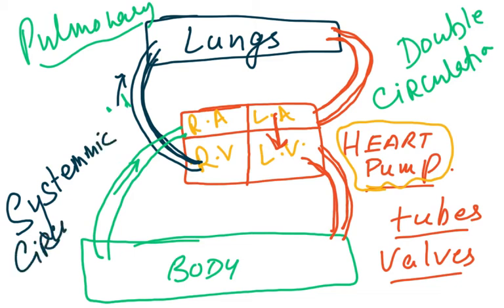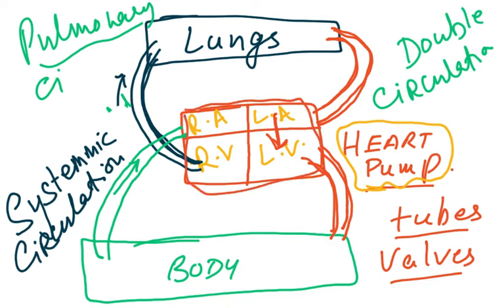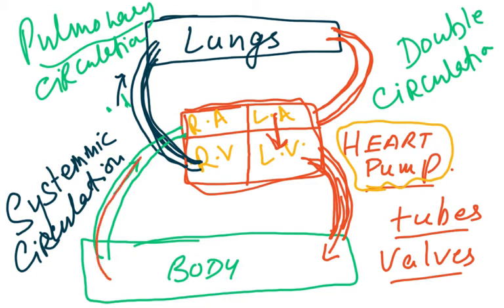The pulmonary circulation is heart to lungs and back to the heart. The systemic circulation is from the heart to the body and then back. This pulmonary circulation is a low-pressure one, because it just has to oxygenate the blood — it doesn't need very high pressure to flow to the lungs and be oxygenated and returned to the heart.